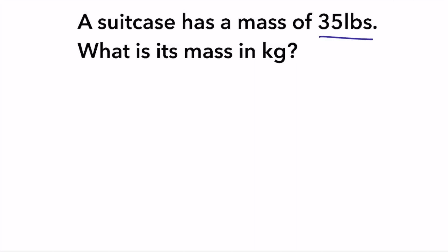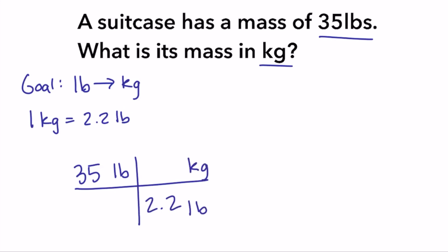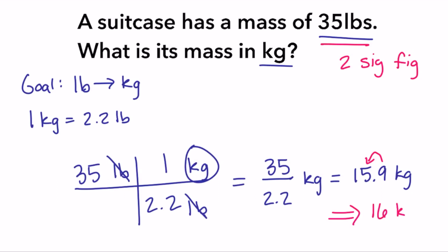A suitcase has a mass of 35 pounds. What is its mass in kilograms? Our goal is to convert pounds to kilograms using the conversion factor one kilogram equals 2.2 pounds. We start with our given, 35 pounds, and multiply by the conversion factor putting pounds on the bottom and kilograms on the top. Our pounds cancel and we're left with kilograms. We divide 35 by 2.2, giving 15.9 kilograms. Our given has two significant figures, so we round to two. The nine rounds the five up, giving a final answer of 16 kilograms.